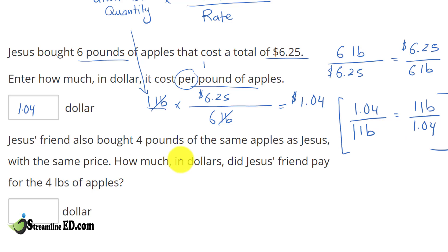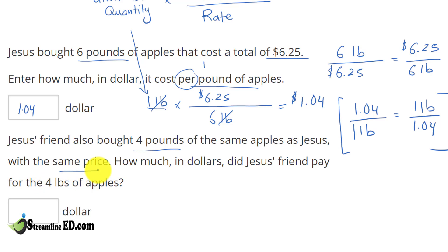So let's see how we can solve this new situation. Jesus's friend also bought 4 pounds of apple of the same kind, with the same price. How much in dollars did Jesus's friend pay for the 4 pounds of apples?